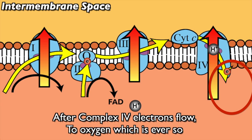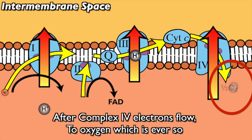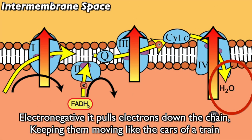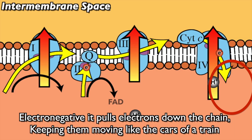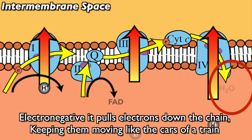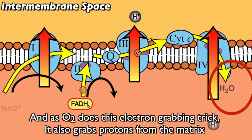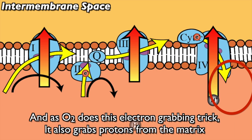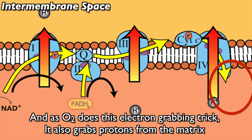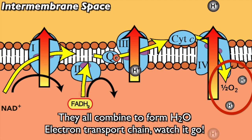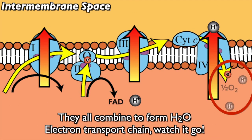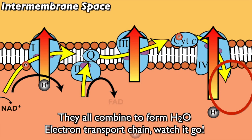After complex four, electrons flow to oxygen, which is ever so electronegative — it pulls electrons down the chain, keeping them moving like the cars of a train. As O2 does this electron-grabbing trick, it also grabs protons from the matrix. They all combine to form H2O.